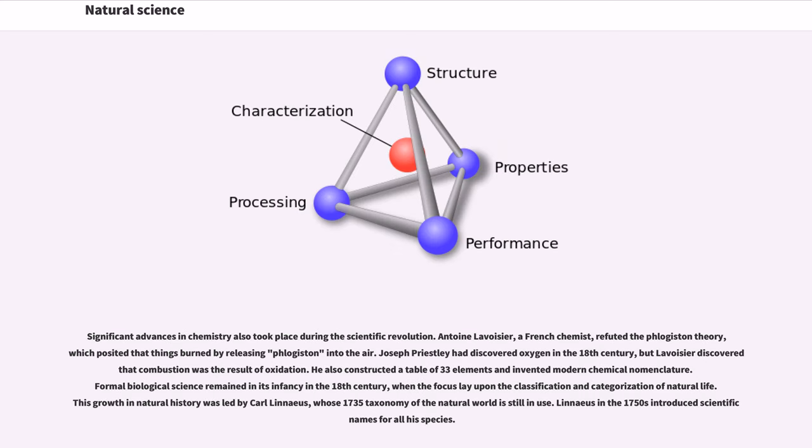Significant advances in chemistry also took place during the scientific revolution. Antoine Lavoisier, a French chemist, refuted the phlogiston theory, which posited that things burned by releasing phlogiston into the air. Joseph Priestley had discovered oxygen in the 18th century, but Lavoisier discovered that combustion was the result of oxidation. He also constructed a table of 33 elements and invented modern chemical nomenclature. Formal biological science remained in its infancy in the 18th century, when the focus lay upon the classification and categorization of natural life. This growth in natural history was led by Carl Linnaeus, whose 1735 taxonomy of the natural world is still in use. Linnaeus in the 1750s introduced scientific names for all his species.